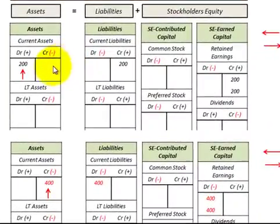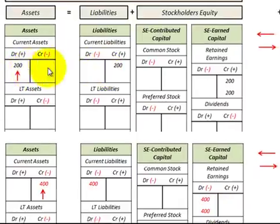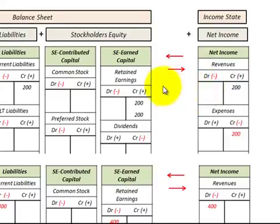Let's look at the accounting equation in terms of either an increase or decrease in assets. Say we had an increase in assets of $200 debited, and a corresponding credit entry would have been directly to a liability account, increasing it by $200. So the accounting equation stays in effect — both sides went up by $200. Now if the asset account involved the net income accounts, those flow back into the balance sheet in retained earnings at the end of the period.